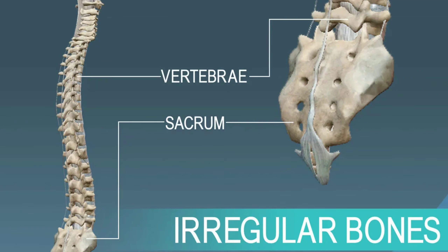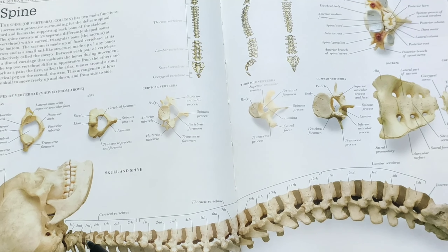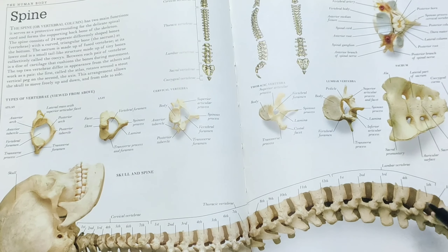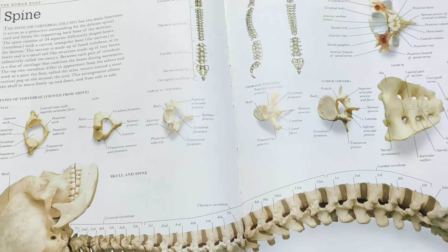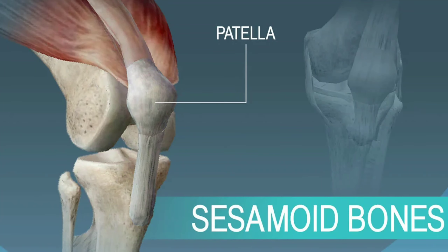The fourth type is irregular bones. These have a complex shape and unique structure. For example, the vertebrae protect the spinal cord, and the pelvic bone is also an irregular bone.